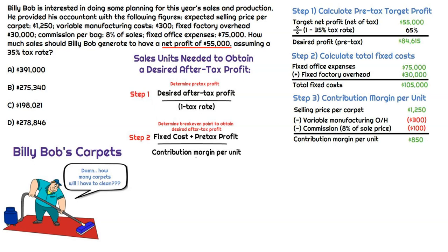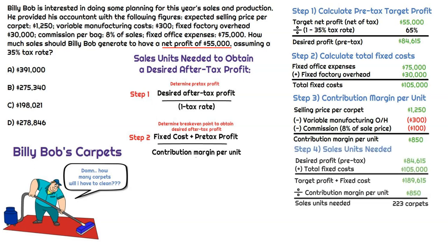Looking back to step two in our visual, we have fixed cost, pre-tax profit, and contribution margin per unit. We're now ready to calculate the sales units needed to obtain that $55,000 after-tax profit. We take the desired pre-tax profit of $84,615 from step one, add total fixed cost of $105,000 from step two, giving us target profit plus fixed cost of $189,615. Dividing by the contribution margin per unit of $850 tells us Bob's going to have to clean 223 carpets — that's the amount of sales units needed.